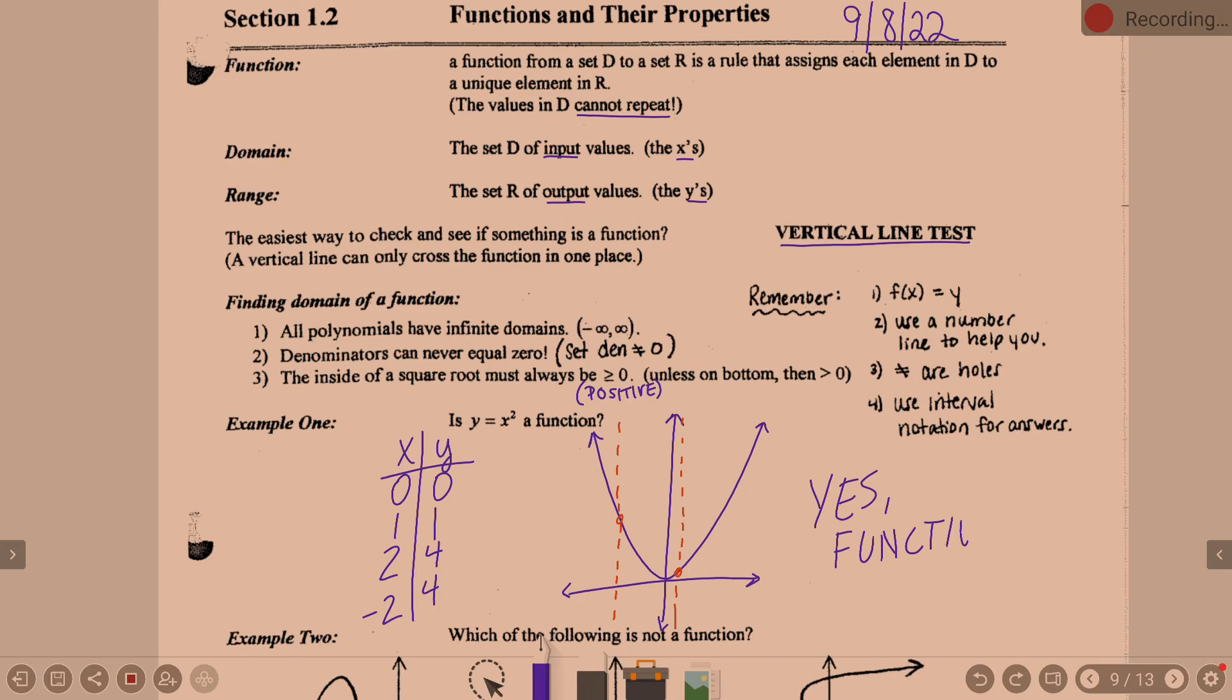Y equals X squared falls into the category of it being a polynomial. It's a polynomial. It's going to go on and on forever to the left and the right. But it is a function. Okay, we'll pick up tomorrow. We'll start with example two, which will be pretty quick. And then three and four will focus on domain and range.